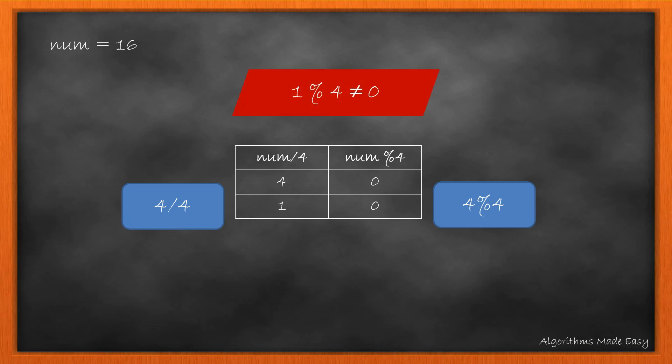In the third iteration, 1 mod 4 is not 0 so we do not reduce the number and check if the number is 1. As it is, we return true.